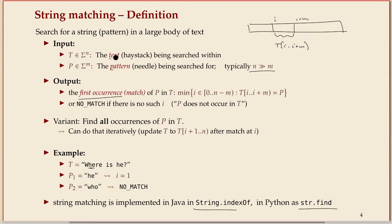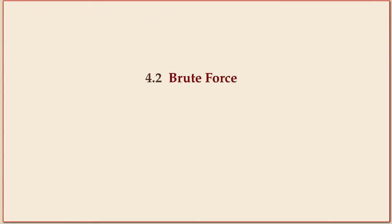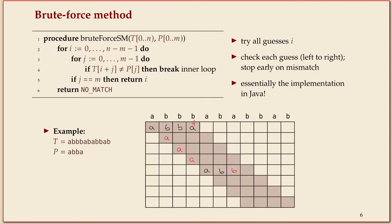We have a text T of length n, a pattern P of length m, and we're trying to find a position in the text where the pattern occurs. We want to report the first occurrence — the starting index where the first character of our pattern occurs in the text. If there are several occurrences, we find the earliest one, or return null. We covered the brute force algorithm: for every possible place the pattern could be, it checks character by character, stopping at a mismatch.